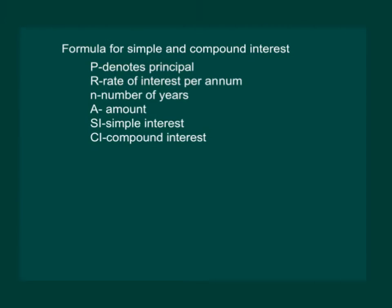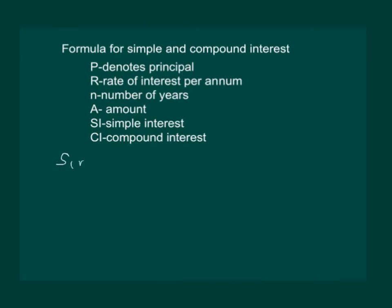To make things simpler, let's study the formulas for simple and compound interest. Let capital P denote the principal — the amount borrowed or deposited. Let r denote the rate of interest per annum, small n denote the number of years, A denote the amount to be returned after n years, SI denote simple interest, and CI denote compound interest.